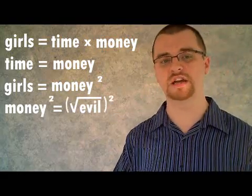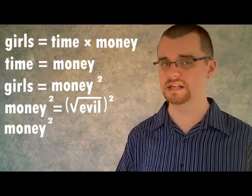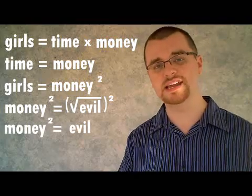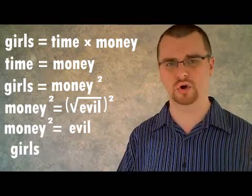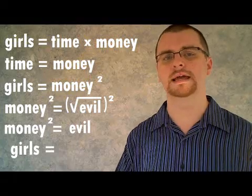Now by squaring both sides of the equation, we end up with money squared equals evil. And by substitution, girls equal evil.